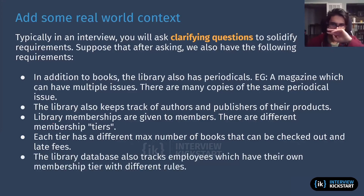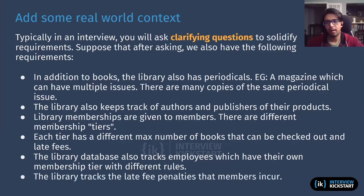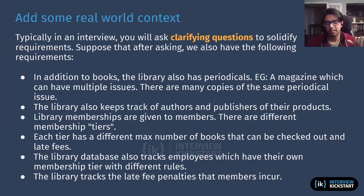We also track employees with their own membership tier and different rules — if the library has people working there, they track their memberships and have them as employees. The last point: they also track the late fee penalties that members incur. This makes sense because if we're tracking transactions, the library also likely wants to track how many books are outstanding, how much in late fees they've collected throughout the year, and how much is outstanding.